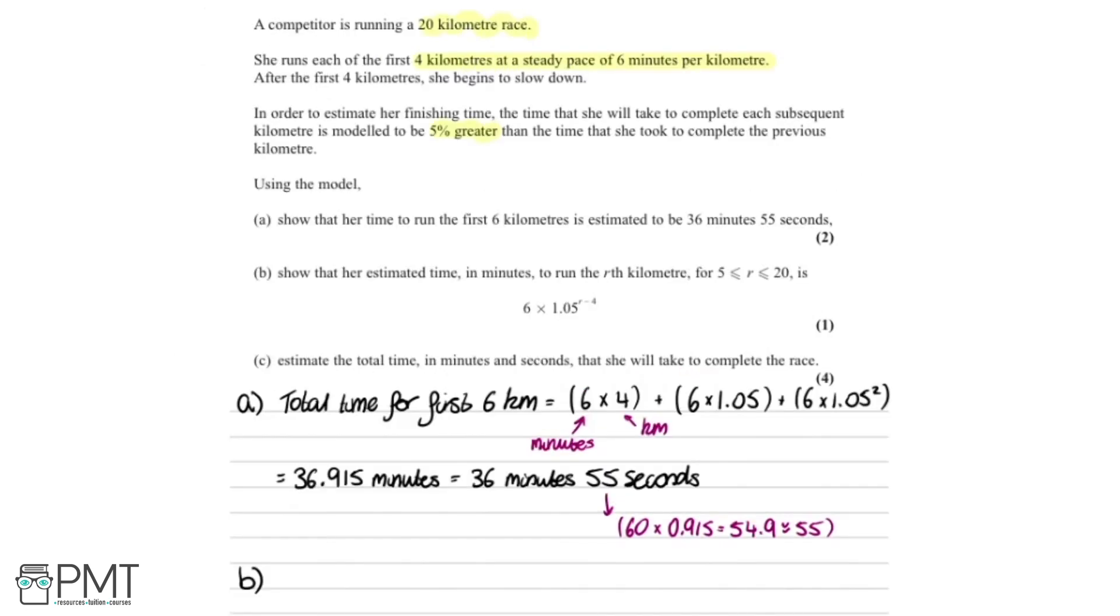Moving on to part B, it says we need to show that her estimated time in minutes to run the rth kilometer, for r between 5 and 20, is 6 times 1.05 to the power of r minus 4. This is just for one mark.